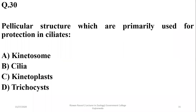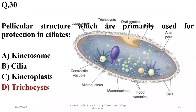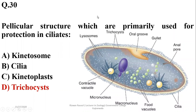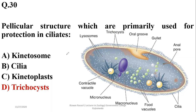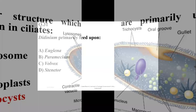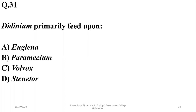Question thirty: pellicular structures primarily used for protection in ciliates are trichocysts. As shown in the diagram, trichocysts are projections from the pellicle that are protective in nature. Kinetosomes are the basal bodies, while kinetoplasts are aggregations of mitochondrial DNA surrounding the mitochondria.